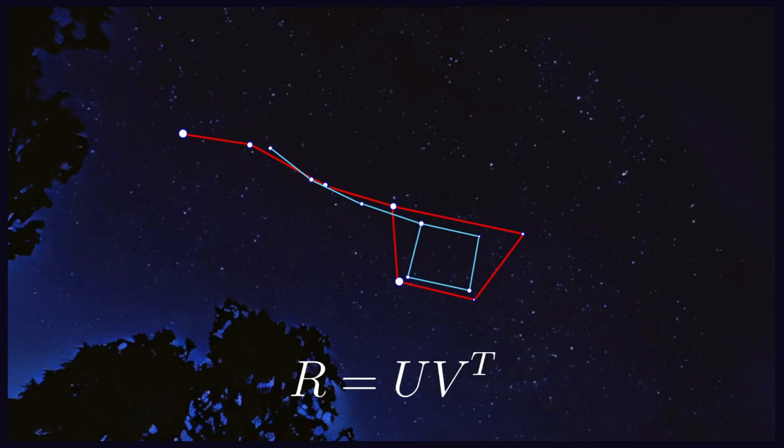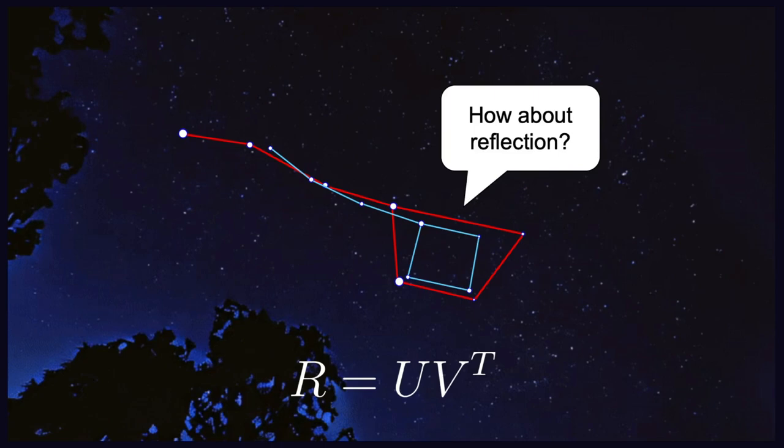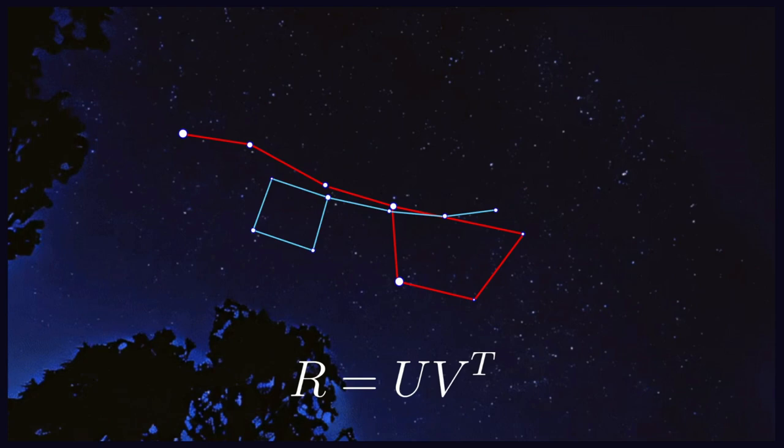However, there is one important aspect to this transformation. What if we also have a reflection here, meaning that the two sets of point patterns cannot be aligned well through a simple rotation and instead we have to perform a reflection along one of the axes? For instance, imagine that we have the following two dippers. No matter how you rotate them, you will never be able to align the two because we have a reflection.